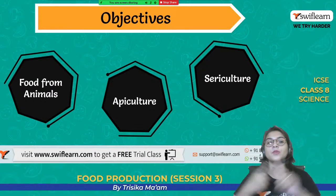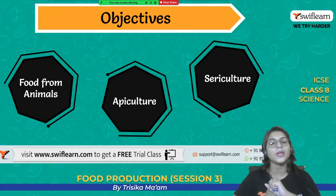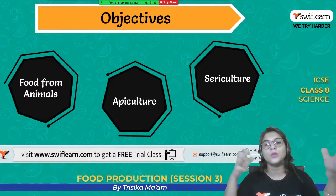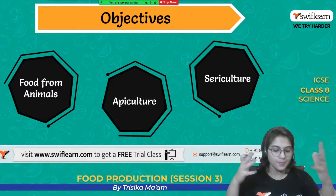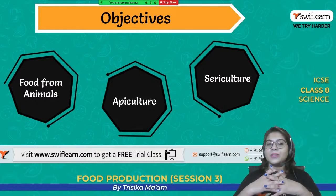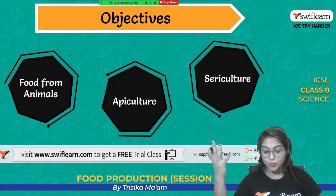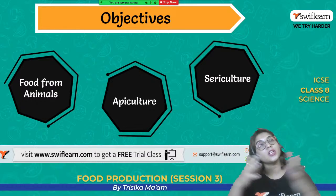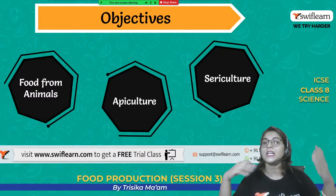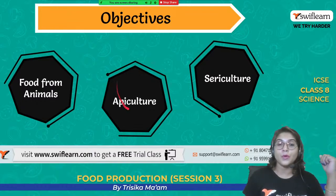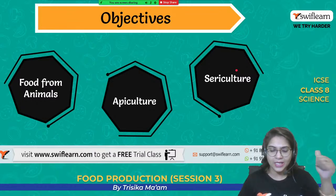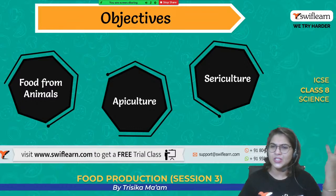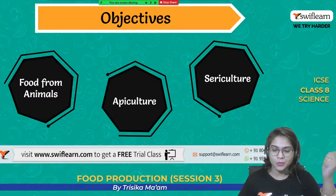We will mainly discuss about the food from animals — poultry, cows, buffaloes for milk, different breeds of cow, and then the white revolution. Then we will go to aquaculture, specifically pisciculture, which is the culture of fish. Then we will move on to apiculture and sericulture. Do you have any idea about apiculture and sericulture? What are they?